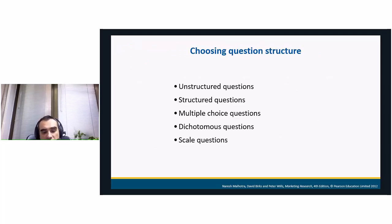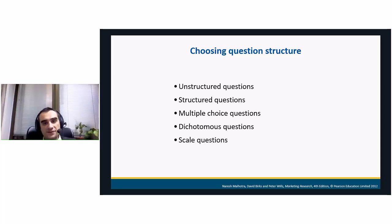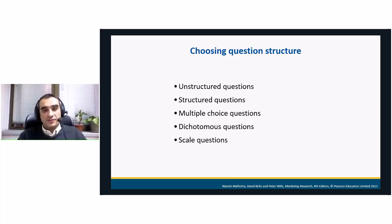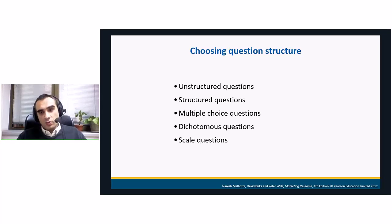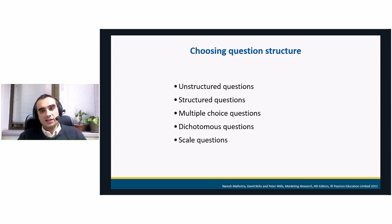Regarding question structure, there are different types. They are divided into unstructured and structured questions. Unstructured questions are open-ended — respondents are given freedom to answer. Structured questions offer alternatives. We also have multiple choice questions, where respondents pick one or more alternatives. Dichotomous questions can be answered with yes or no. And finally, scale questions, where respondents express their degree of opinion — for example, from extremely dissatisfied, dissatisfied, neither satisfied nor dissatisfied, satisfied, to extremely satisfied.